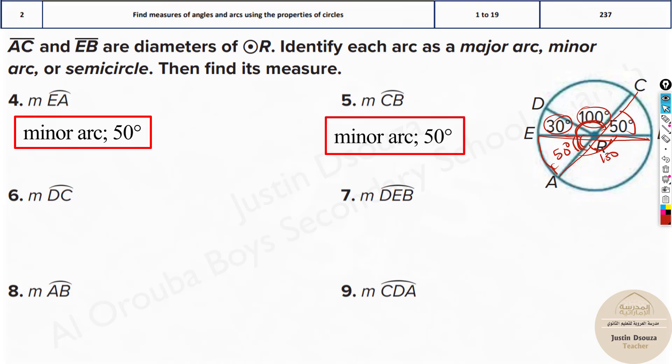What about CB? You can see over here CB is this arc. That is 50 degrees already given. DC, where is DC? It's 100. It is minor arc as well.